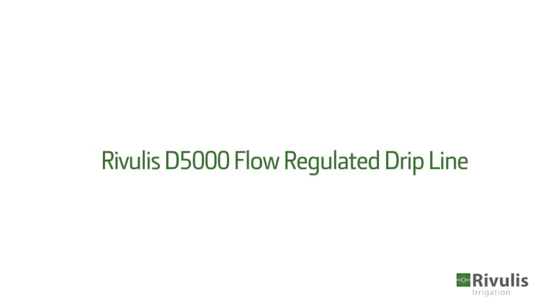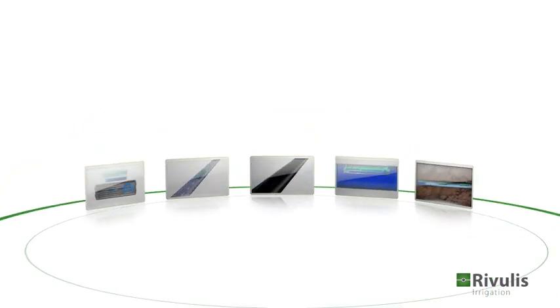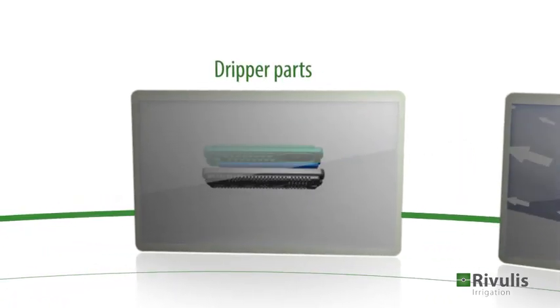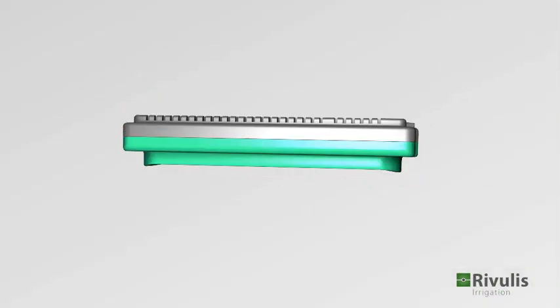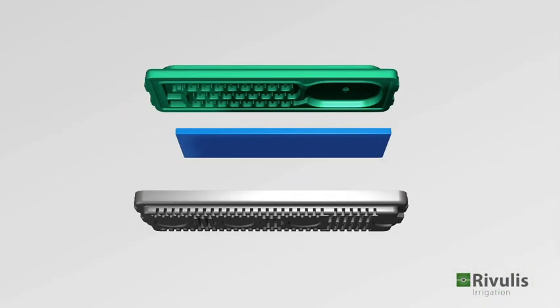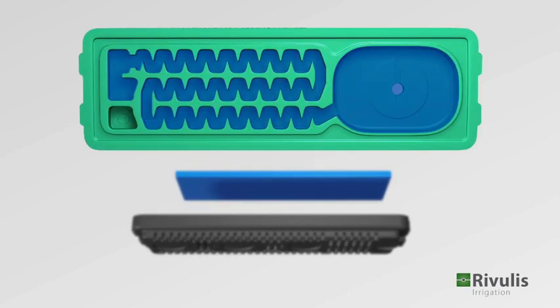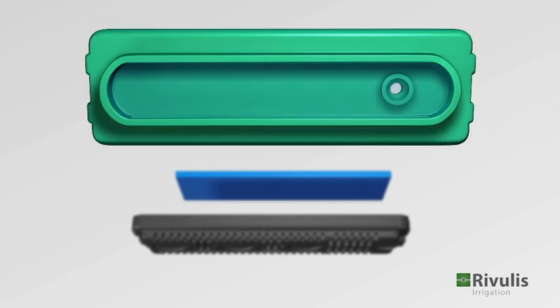The D5000 flow regulated drip line is designed for reliability and high performance. Take a journey inside the dripper and discover how it works. The D5000 dripper consists of three parts: a cover with a labyrinth and a regulation chamber on one side, and a large water outlet chamber on the other side.